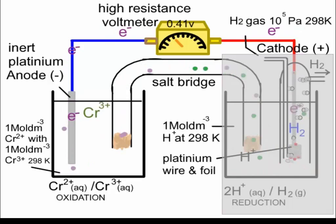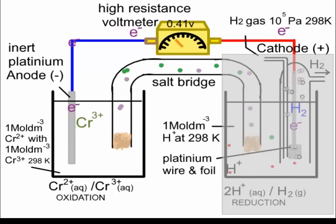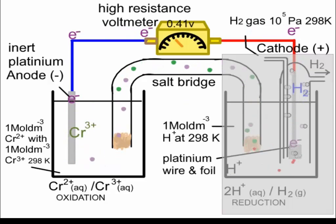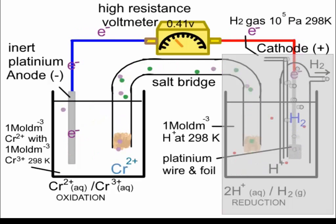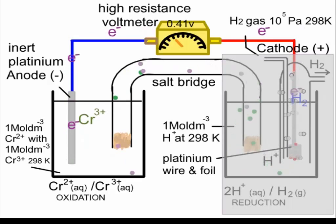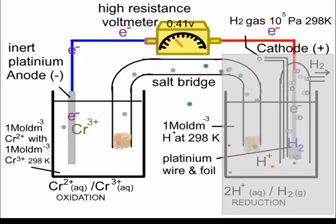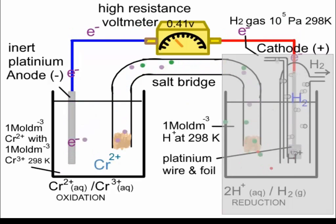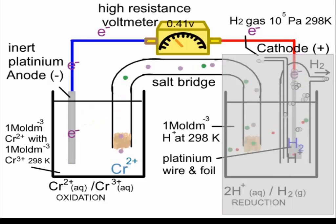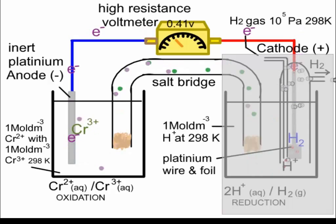You'll notice that the anode is labelled as the negative electrode and the cathode as the positive electrode, which is different to how they are labelled in electrolysis. This traces back to Benjamin Franklin's original error in thinking that electricity was a flow of positive charge. So much literature had been written by the time the error was discovered that it was decided to simply overcome the matter by labelling the anode negative and the cathode positive. Remember: in a galvanic cell, the anode is negative and the cathode is positive.